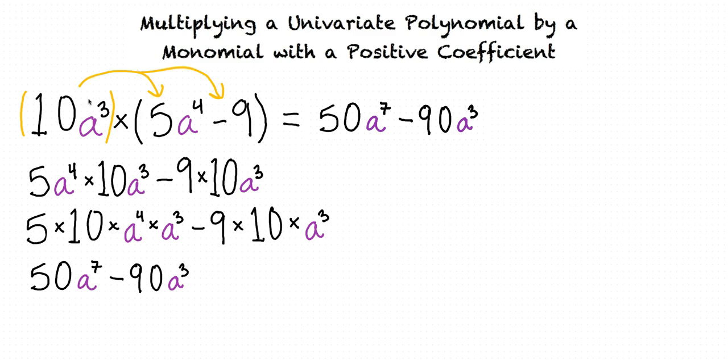So we found that our original expression 10 times a cubed times the difference of 5a to the fourth power and 9 equals 50a to the seventh power minus 90a cubed.